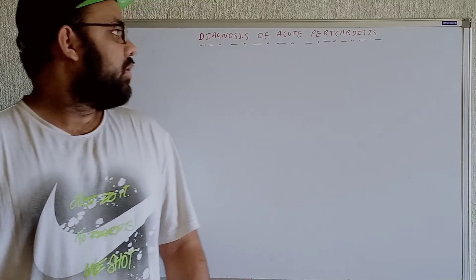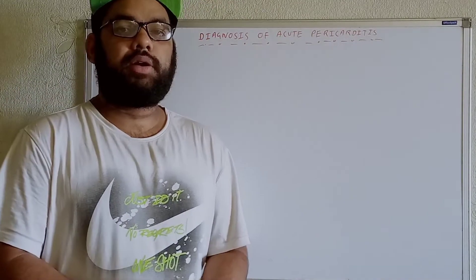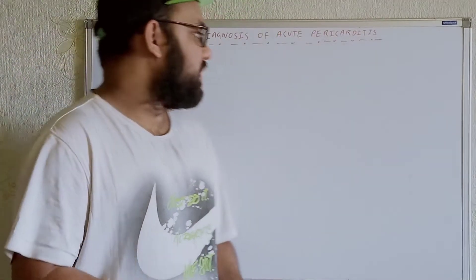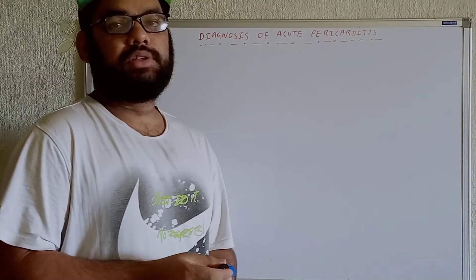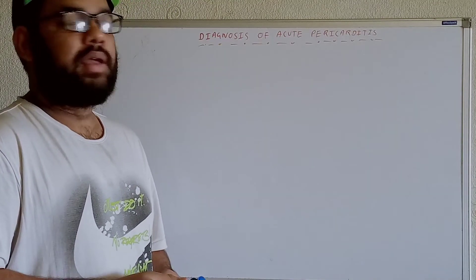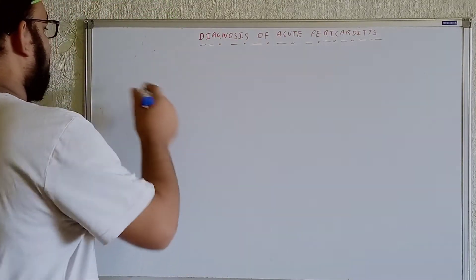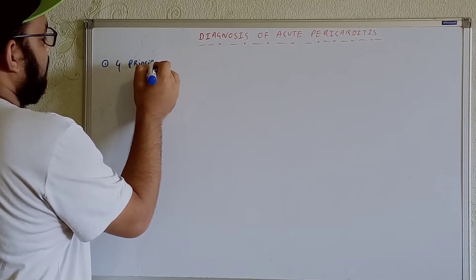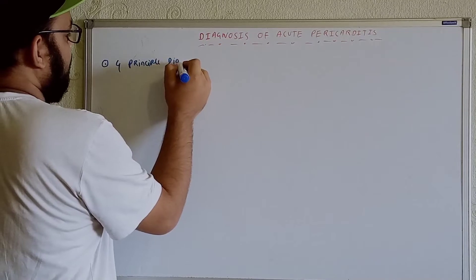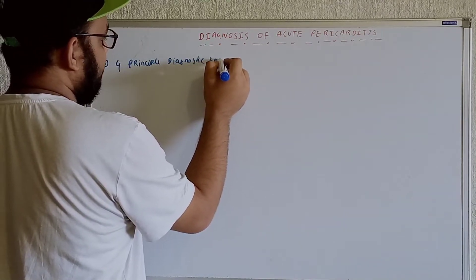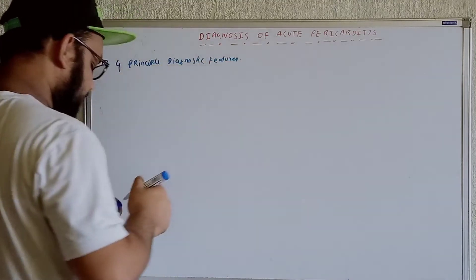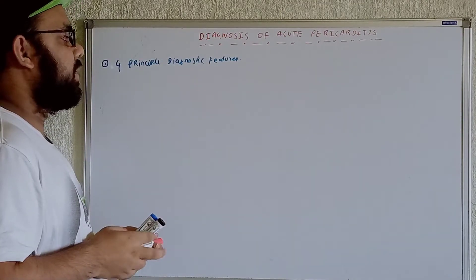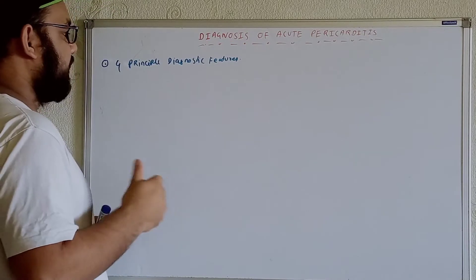Hello friends, welcome back to my channel Medicine Number Zero. Today we will talk about the diagnosis of acute pericarditis. There are four main principle diagnostic features for acute pericarditis. Let's write them down — we get four principle diagnostic features.